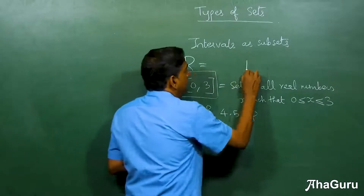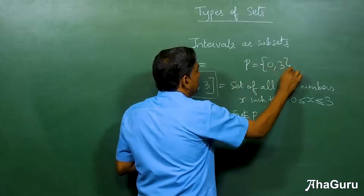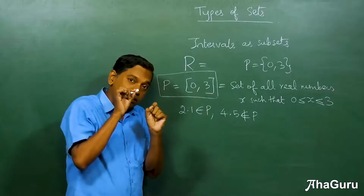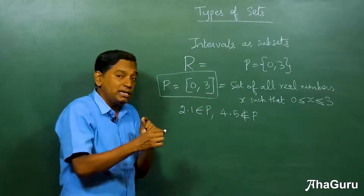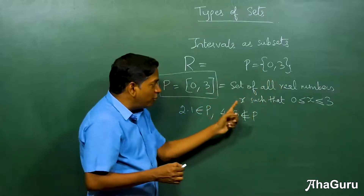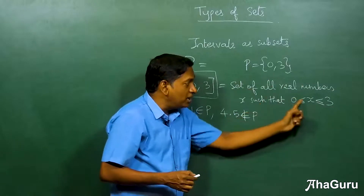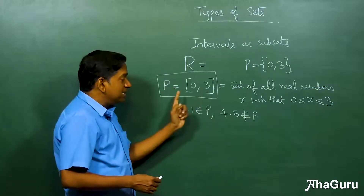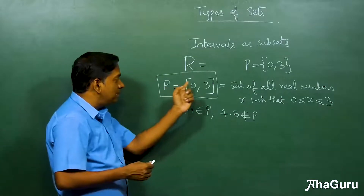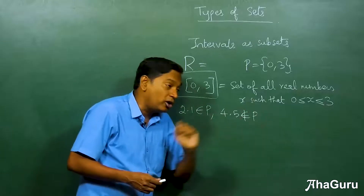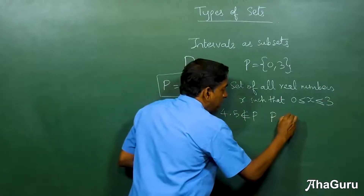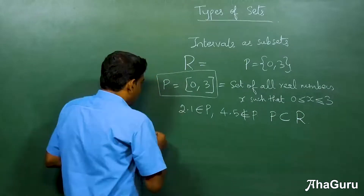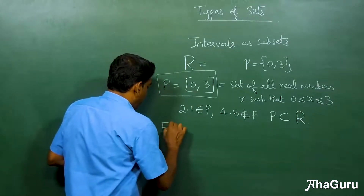We use square brackets and not curly brackets for intervals because {0, 3} with curly brackets refers to just two separate objects 0 and 3. With square brackets, we know it's a special situation describing all real numbers between 0 and 3, both endpoints included. This interval is also a set, so we can discuss membership. Therefore P = [0, 3] is a proper subset of R.